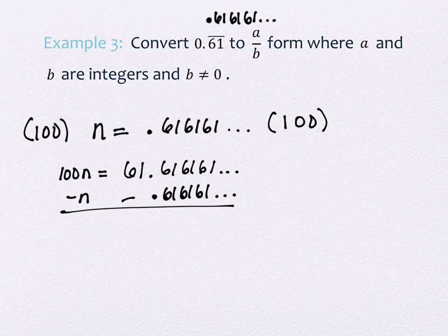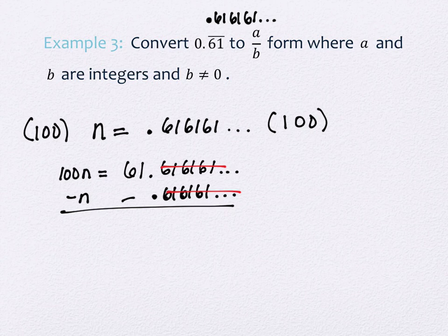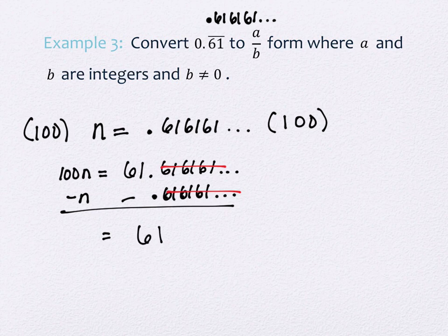Notice what happens on the right-hand side. When I subtract these, all the decimals cancel out. Now, as we work through these, you will see that it's not always the case that all the decimals cancel out, but it is the case that the repeating from some point on will. What am I going to be left with on this problem on the right-hand side? 61.